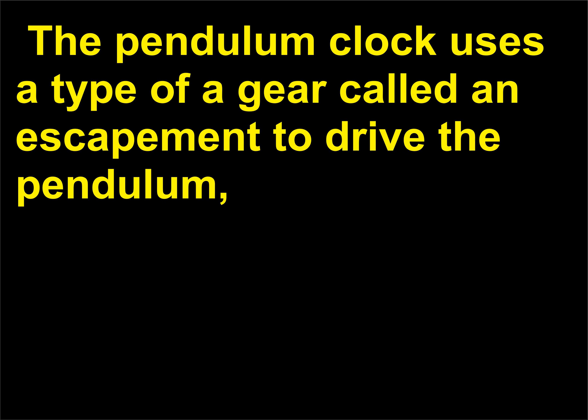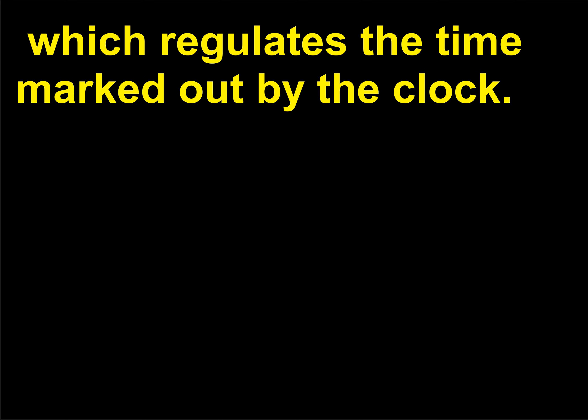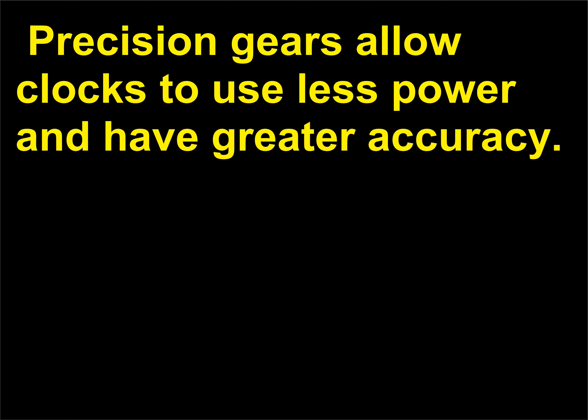The pendulum clock uses a type of gear called an escapement to drive the pendulum, which regulates the time marked out by the clock. Precision gears allow clocks to use less power and have greater accuracy.